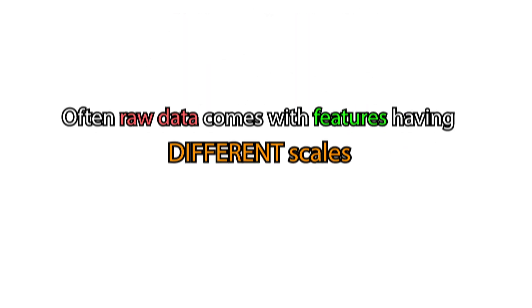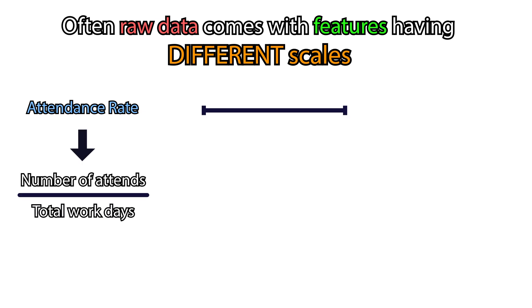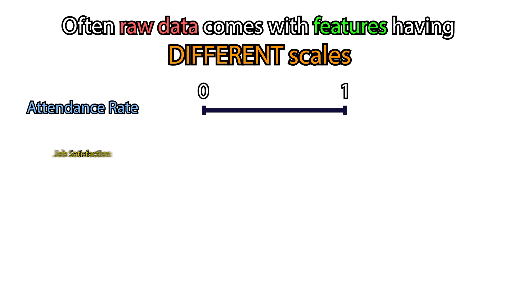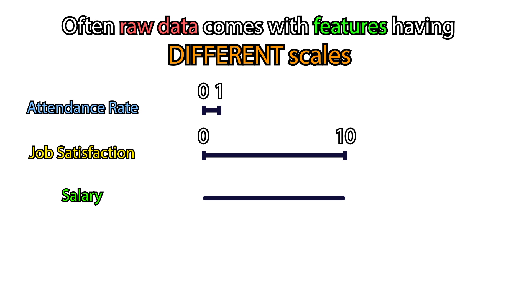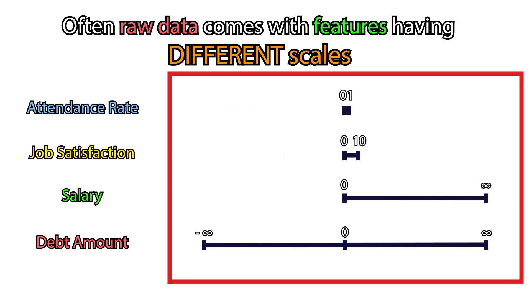Often raw data comes with features that have vastly different ranges. For example, attendance rates, reflecting the proportion of days an employee attends work out of the total available days, job satisfaction ratings ranging from 0 to 10, salary which can range from 0 to infinity, and debt amounts which can vary from negative infinity to positive infinity. See how different the scales are.